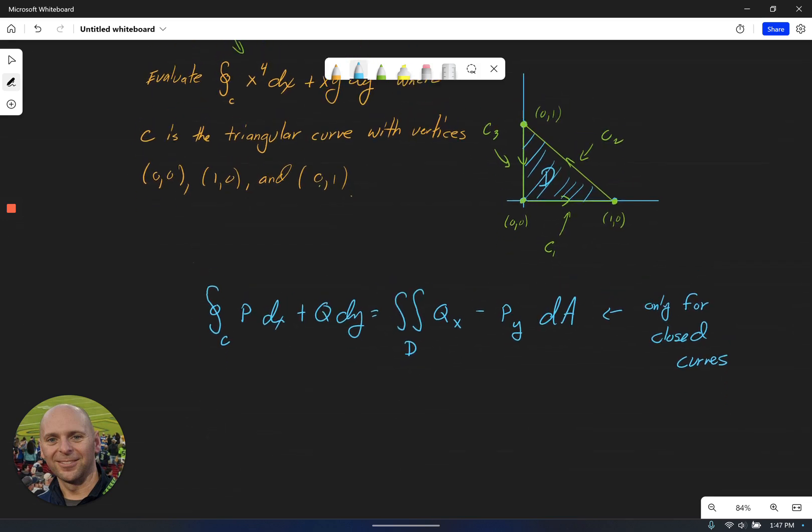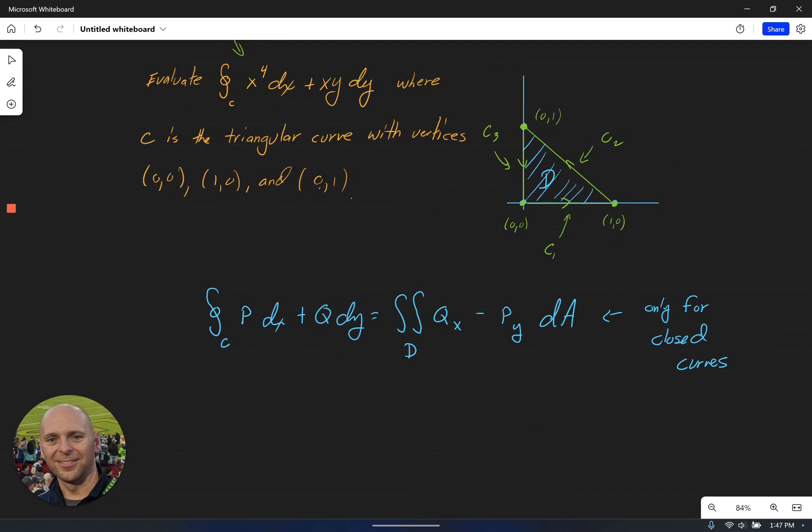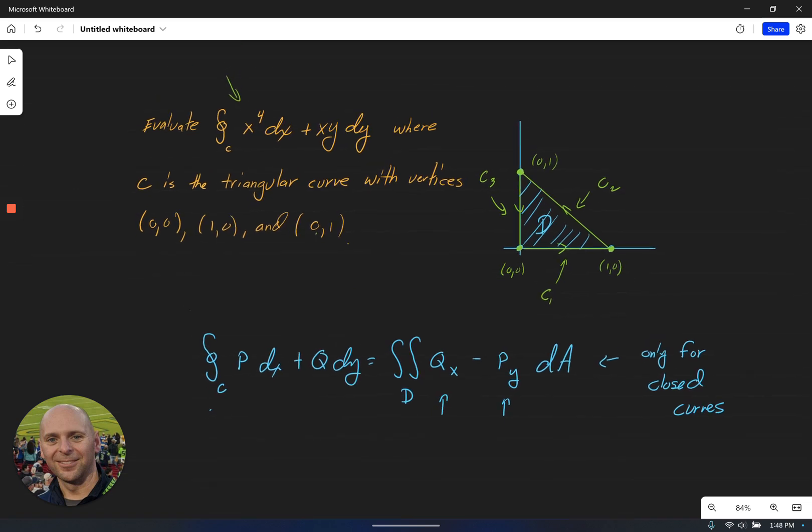We just have to pull out the pieces that we want from above. So I need the partial of Q with respect to x and the partial of P with respect to y to set up my integrand. So if we go back up to our original problem statement here, we've got that P is equal to x to the fourth and Q is equal to xy. So let's take those partials. The partial of Q with respect to x is y and the partial of P with respect to y is zero.